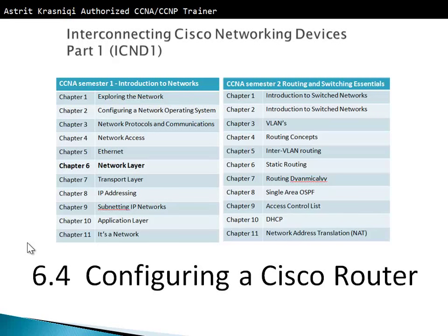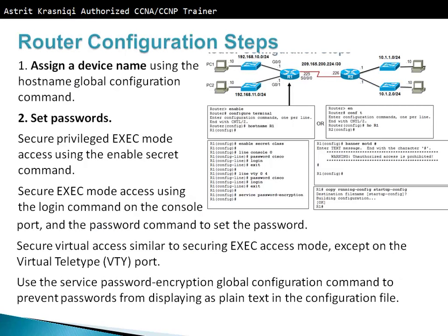We are covering section 6.4, configuring a Cisco router, from chapter 6 on the network layer. The first configuration step is to assign a device name. If you have five routers and every router is called 'router', you won't know which one you're configuring. The name is locally significant only — it's just for you to differentiate which router you are configuring.